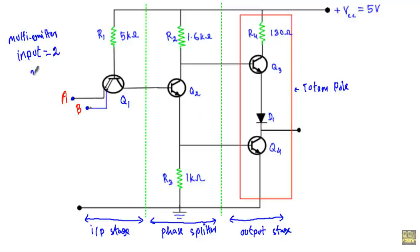If I need a three-input TTL NAND gate, I will draw another emitter terminal from the Q1 structure. The collector terminal of transistor Q1 will be connected with the base terminal of transistor Q2, and transistor Q2 will act as a phase splitter. Transistor Q2 will act as a switch using its switching action.